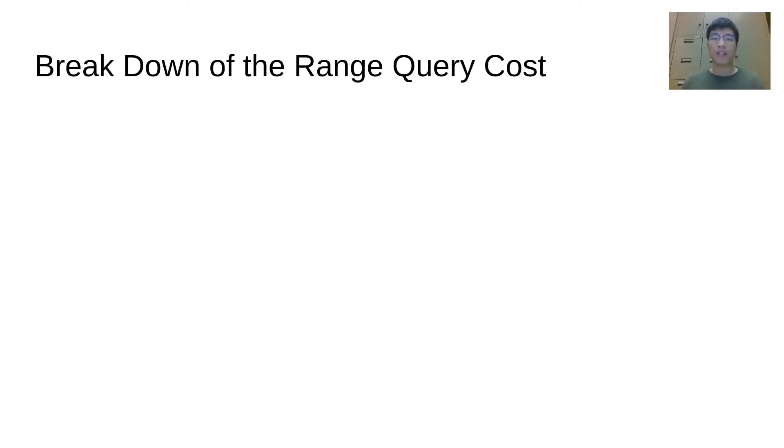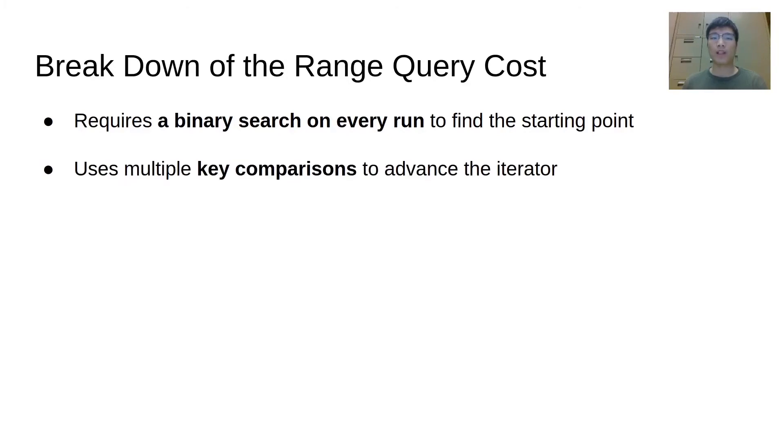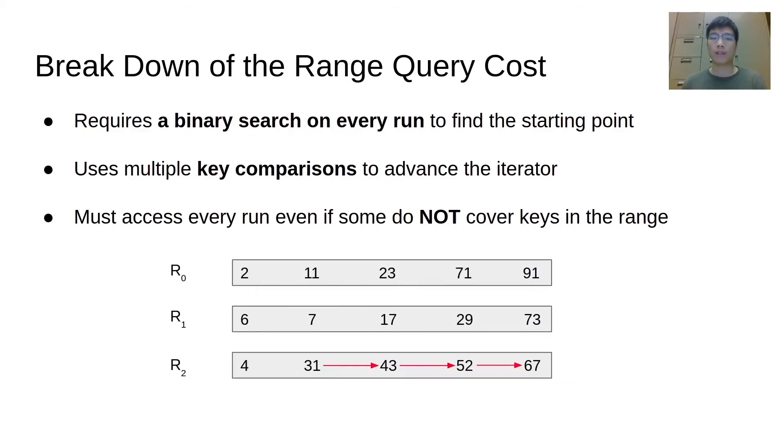The cost of min-heap could be summarized as follows. First, initializing the min-heap requires a binary search on every run. Second, when advancing the iterator, it requires multiple key comparisons to adjust the heap and output the smallest key. Lastly, it needs to access every run even if some of the runs do not cover the keys in the range. In our previous example, the keys 31, 43, and 52 only belong to R2, but we still need to access R0 and R1.